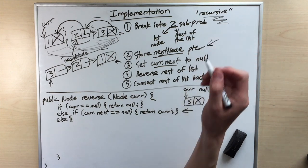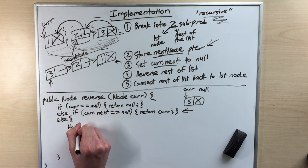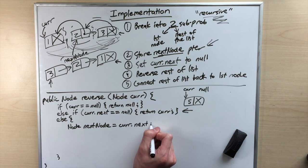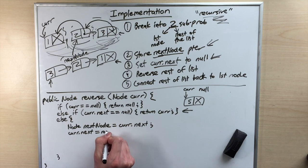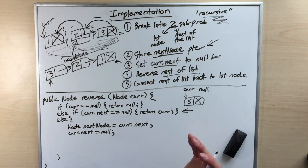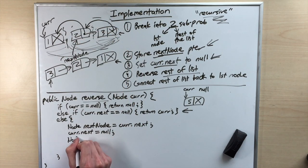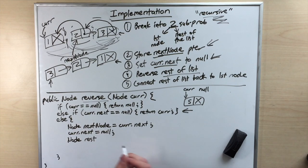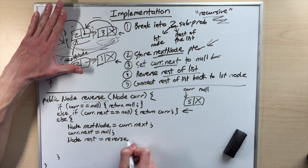If our linked list is longer than one node, we go into our else case. First, we set our nextNode pointer — it'll always be the node that comes after cur. So node nextNode equals cur.next — that'll be the second node. Then we set cur.next equals null. Then we have to reverse the rest of the list, and here's where we take a recursive leap of faith. Let's call the rest equals reverse of nextNode.